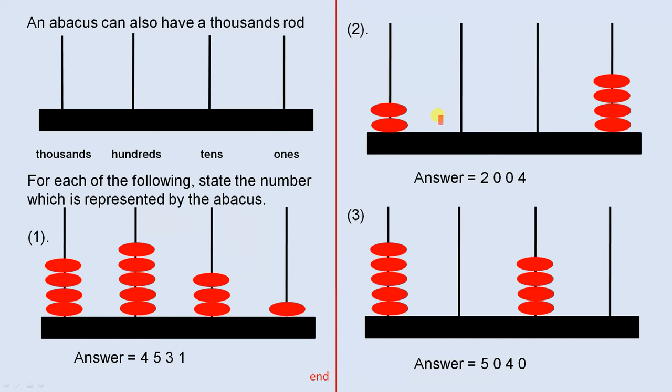For the next one, you've got two beads in the thousands column, no beads in the hundred, no beads in the ten, and four beads in the one. So it's 2004.